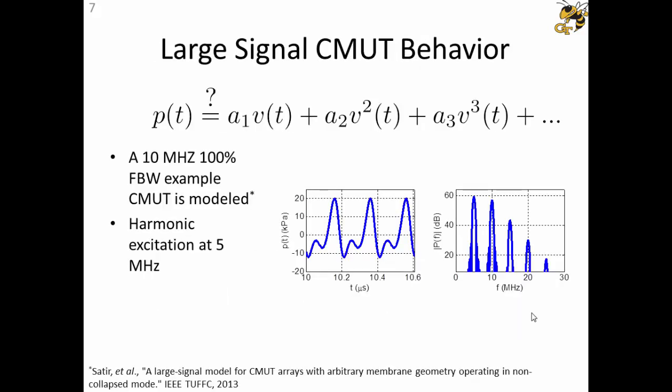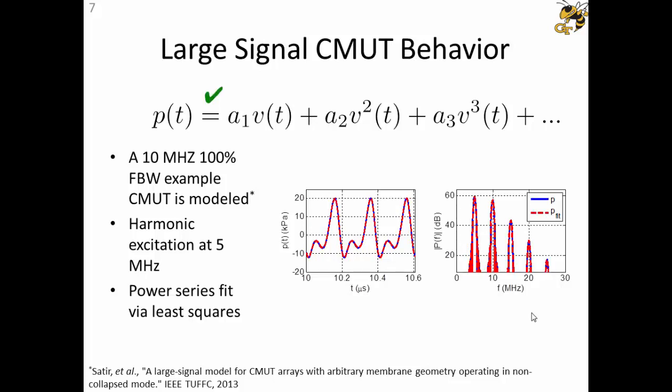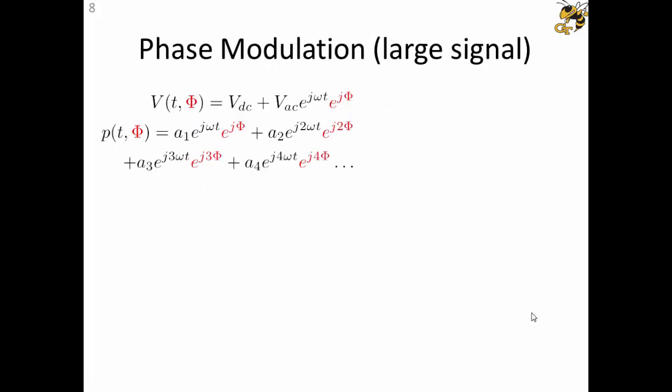To test that, the model is investigated by trial. We model an example CMUT. There's nothing special about this model CMUT. We are driving it in a very large signal regime where we can see that the harmonic content is pretty high compared to the fundamental content. When we check if we can fit a power series to this harmonic excitation pressure output, we can hypothesize that such a relationship exists. When we do a least squares fit, we indeed see that such a relationship is valid. Then we can employ the idea that we can control the phase of each higher order harmonic in a controlled way, separately, by adjusting the phase of the input signal.